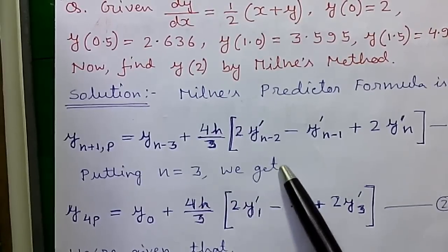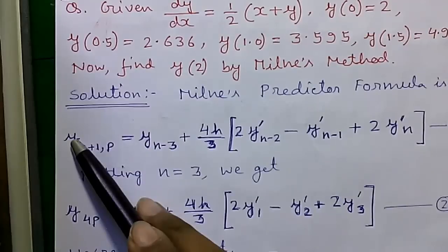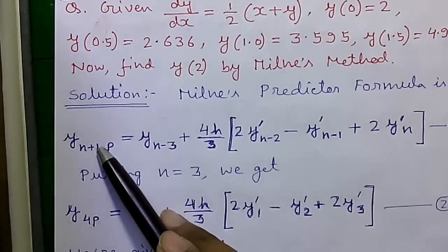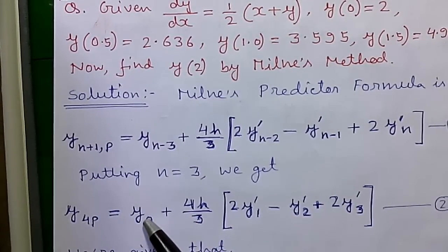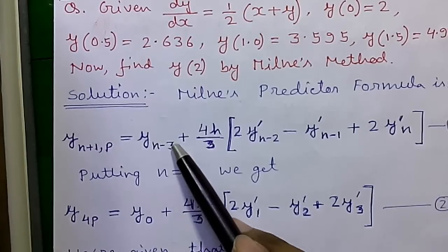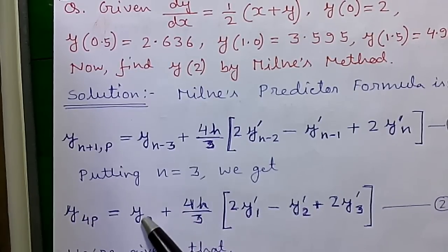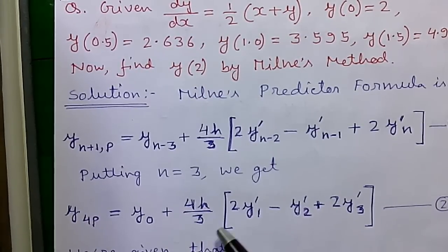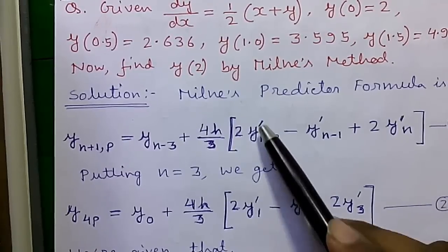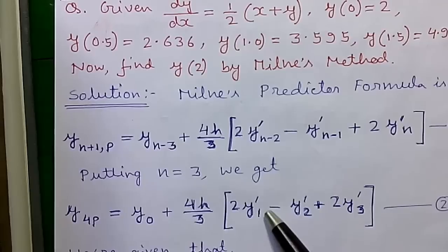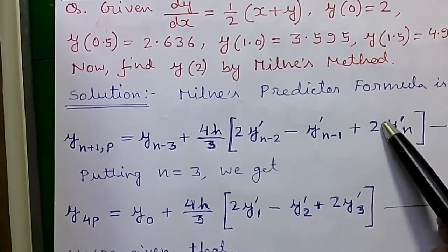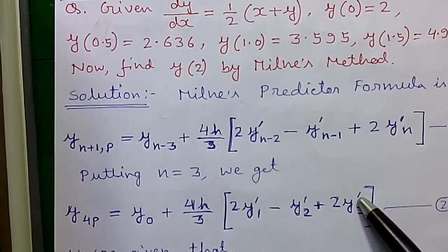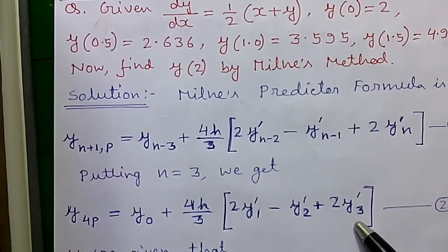So by putting n equals 3 we will get y(4,p) equals y(0) plus 4h/3 times [2y'(1) minus y'(2) plus 2y'(3)].